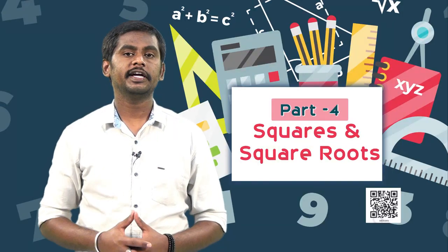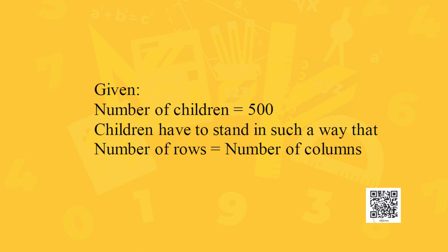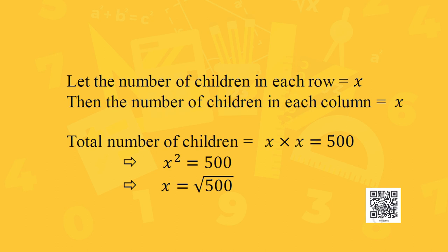Now let us solve an interesting word problem. There are 500 children in a school. For a PT drill, they must stand such that the number of rows equals the number of columns. How many children would be left out? Let the number of children in each row be x; then children in each column is also x. So total children = x × x = 500, which means x² = 500, implying x = √500.